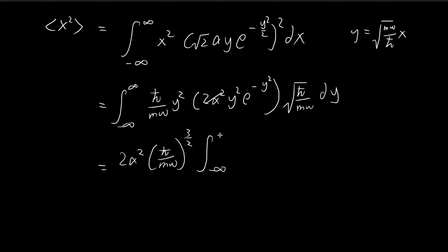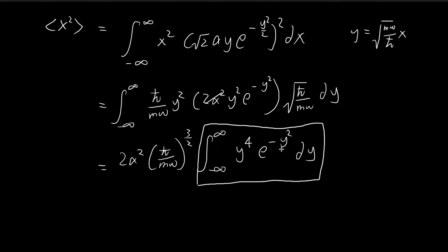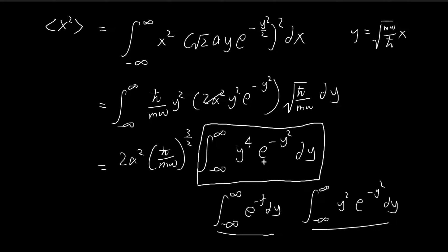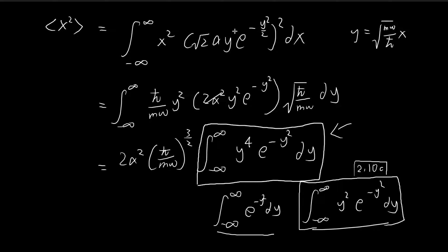Pulling out some of the constants, we get a factor of 3/2, and then at the end we're left with an integral in dy. This integral involves y to the power of 4, which is similar to integrals we've seen before. Previously we dealt with the Gaussian integral equal to the square root of π, or with y squared in front. This time we have y to the power of 4, so I'm going to show you a new trick to evaluate this.